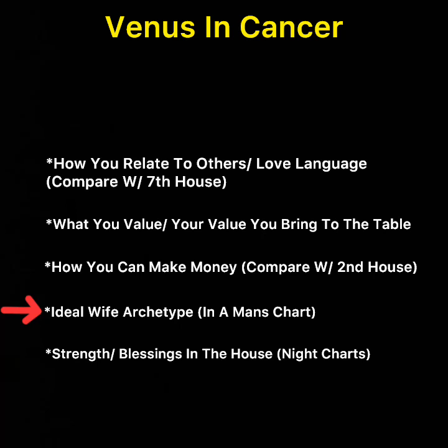If your Venus is in the first house — the Aries house — you'll also need a woman with Aries qualities. Second house: Taurus qualities. Third: Gemini. Fourth: Cancer. Fifth: Leo. Sixth: Virgo. Seventh: Libra. Eighth: Scorpio. Ninth: Sagittarius. Tenth: Capricorn. Eleventh: Aquarius. Twelfth: Pisces. I'll link a video on keywords associated with each sign. Check which house Venus is in to get more qualities of the ideal woman you need.